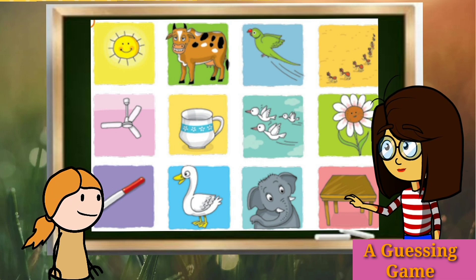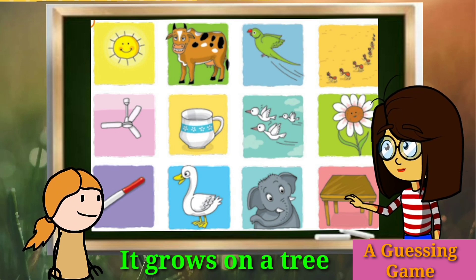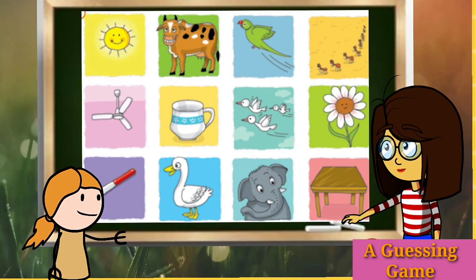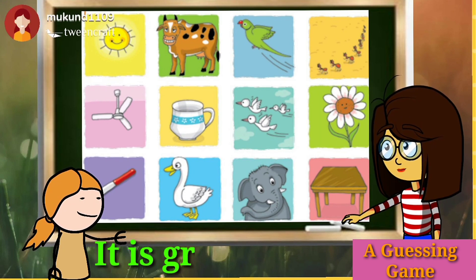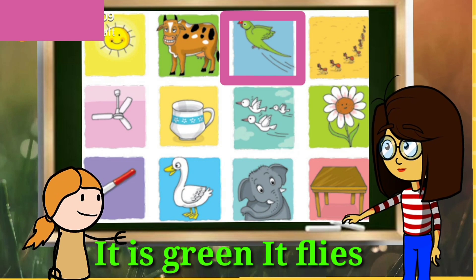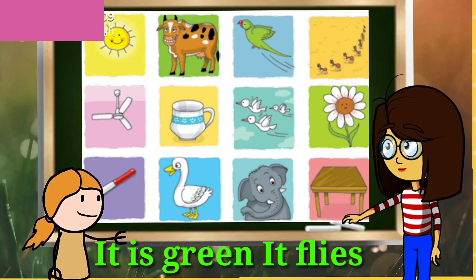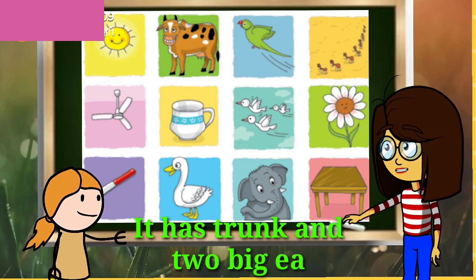Good. Listen — it grows on a tree. It grows on a tree. It is a flower. Another one: it is green and it flies. It is a parrot — parrot is green and it flies.